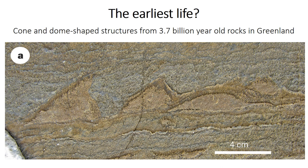Are they the oldest evidence of life on Earth? This claim has been made, and if they are stromatolites, then it means that life was present in the oldest rocks that we know of from the ocean. That means life first evolved at some point during the first 800 million years of Earth history. That's a very long time, and we may actually never know when, because these are the oldest rocks that we know of from the ocean.